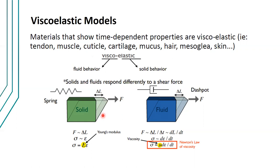In solids, if you apply a shear force it will undergo some deformation, characterized by this equation: stress is proportional to strain, and the constant of proportionality is Young's modulus — although we usually use the term Young's modulus for normal stresses like compressive and tensile stress, we can also use it for shear stresses. In fluids, on the other hand, if you apply a shear force, the shear stress is related to the shear rate or the rate of strain.